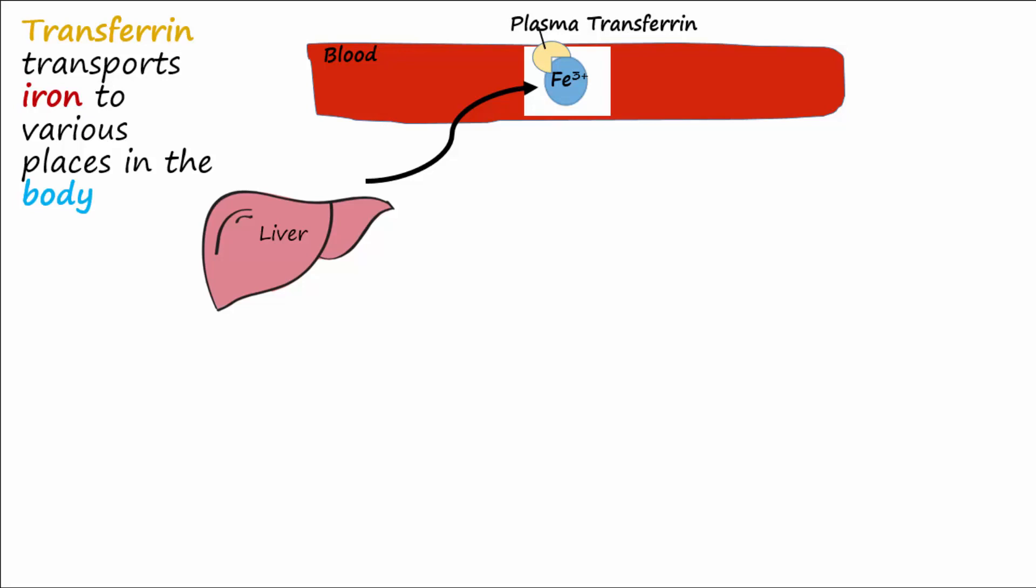Transferrin is also made by the brain and testes since proteins can't cross the blood-brain barrier or the blood-testes barrier.